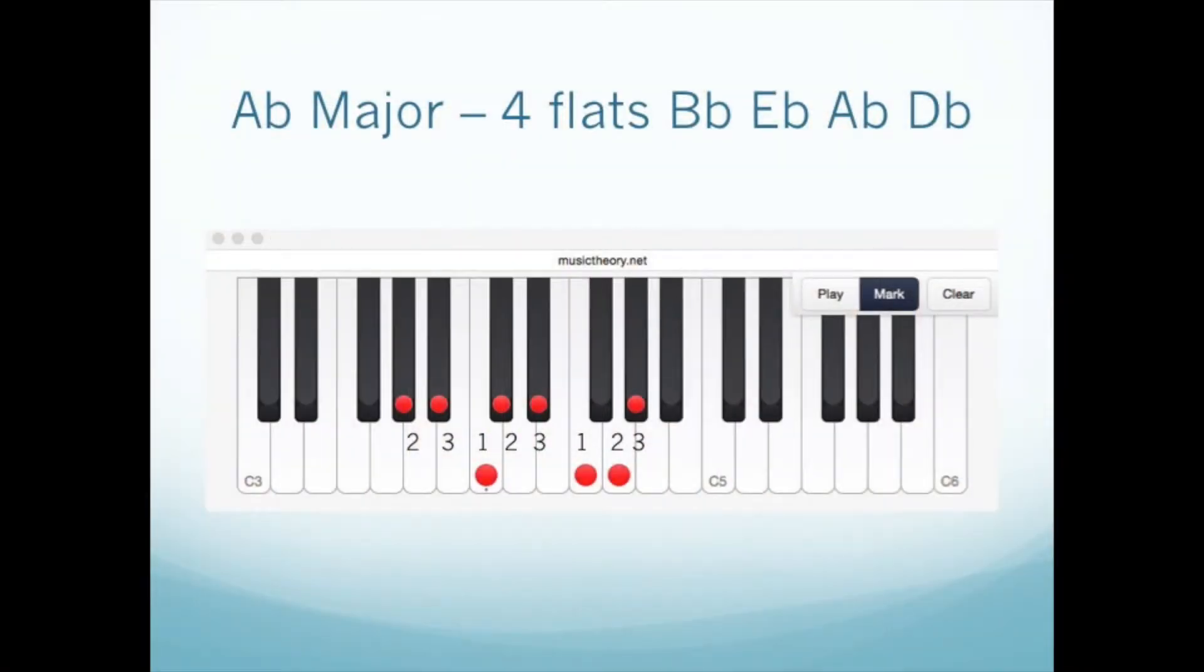The Ab major scale adds the Db as a scale tone. This scale, you still begin using finger 2, and the thumb still lands on the notes F and C.